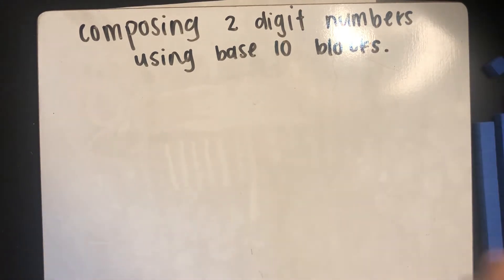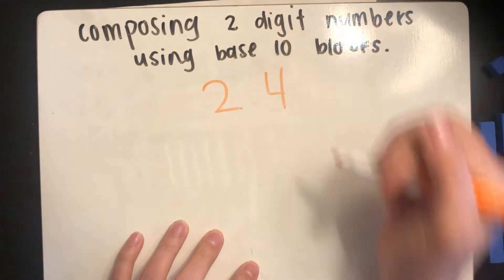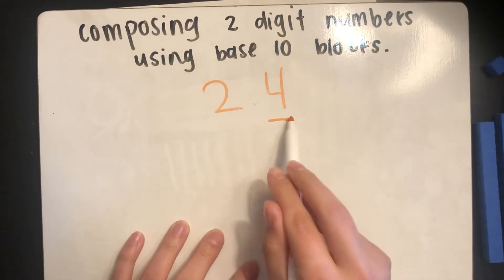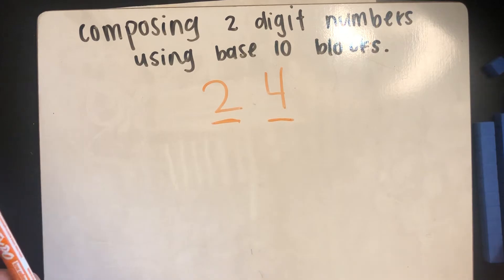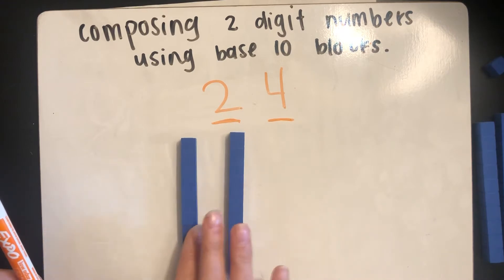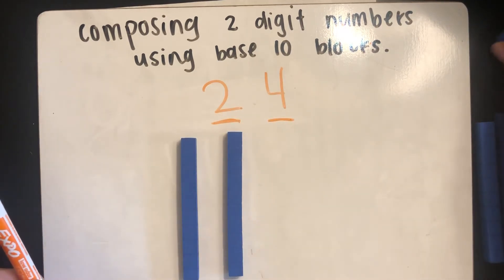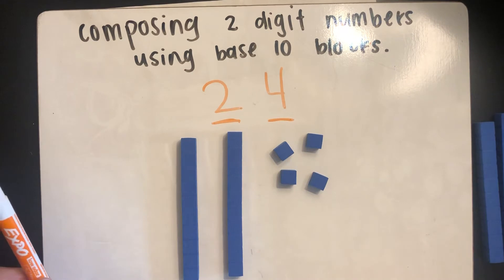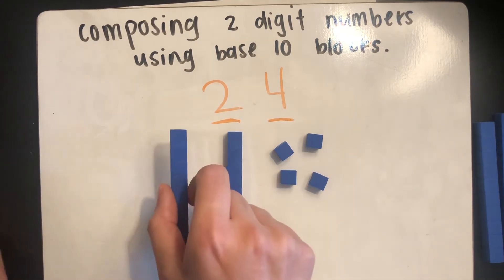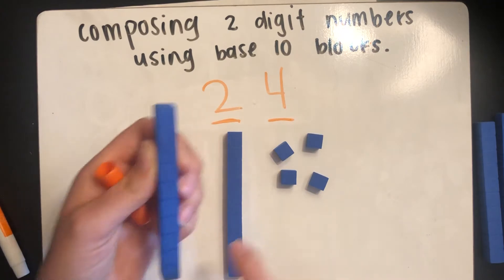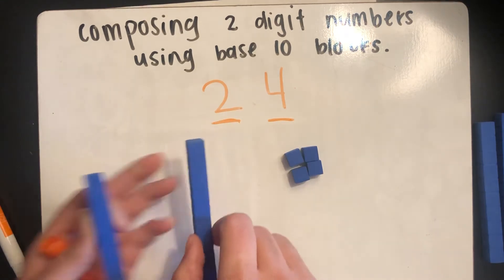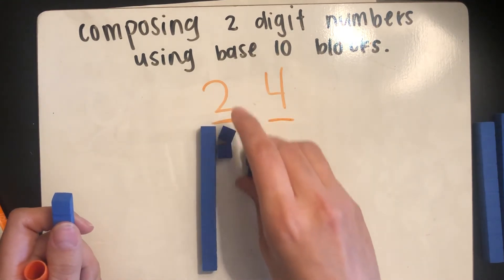For example, if I had the number 24, we know that the number 24 has four ones and two tens. So I can use my base 10 blocks to build that number. I can use two 10 sticks since we have two tens, and I can use four ones blocks to represent four ones in the number 24. If I counted all of the little blocks inside my 10 sticks and all of my ones cubes, I would get the number 24, because one 10 stick is the same as 10 ones.